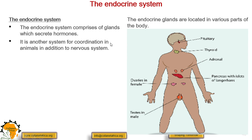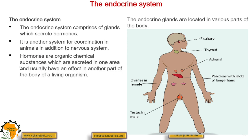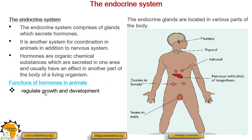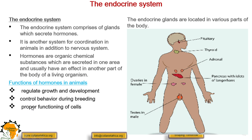The endocrine system is another system for coordination in animals, in addition to the nervous system. Hormones are defined as organic chemical substances secreted in one area that usually have an impact in another part of the body. The functions of hormones in animals include regulation of growth and development, controlling behavior during breeding, and proper functioning of cells and regulation of metabolic activities.